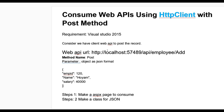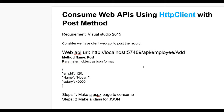Hello guys, today we learn how to consume a web API using HttpClient with POST method. For this we need Visual Studio 2015, and we must have a web API URL. Consider we have a client web API to post a record — the web API URL is http://localhost/api/employee — and you must know the method name, like POST, and the parameters given by the client as an object.